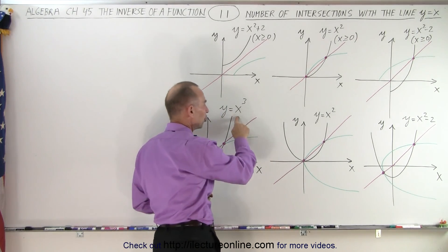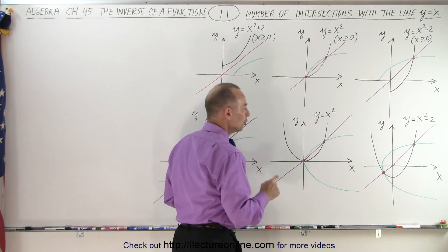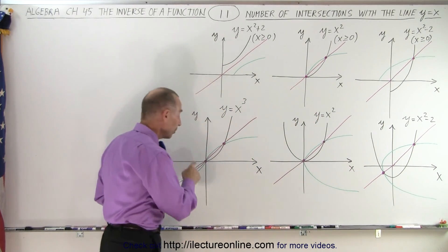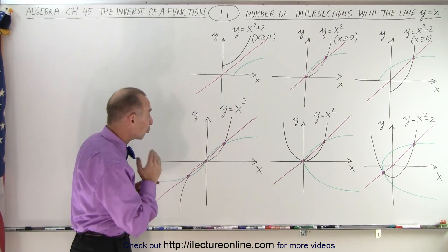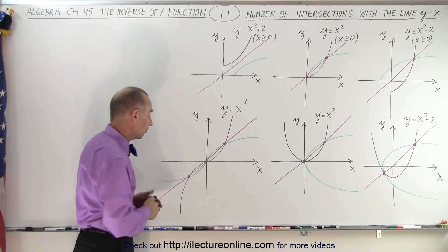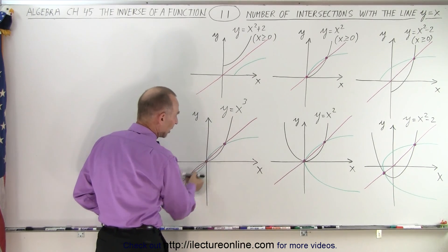Now at the bottom we have y equals x cubed, y equals x squared, and y equals x squared minus 2. Notice that these two are not one-to-one functions, but this one is. Y equals x cubed, since it's an odd function, x to the third power, it does give us a one-to-one function. We can try the horizontal test and it only crosses the line once.